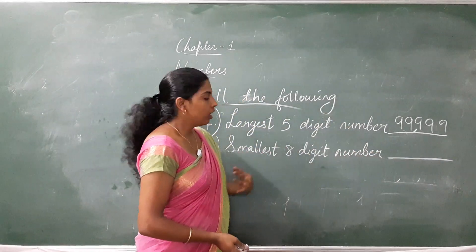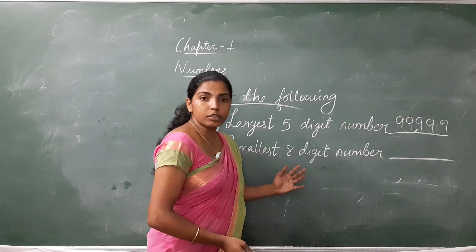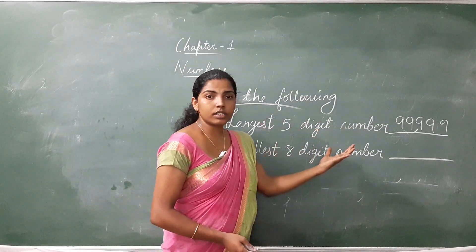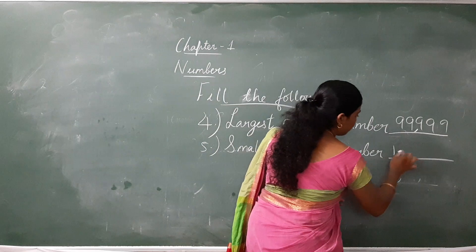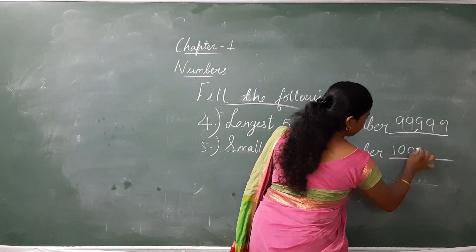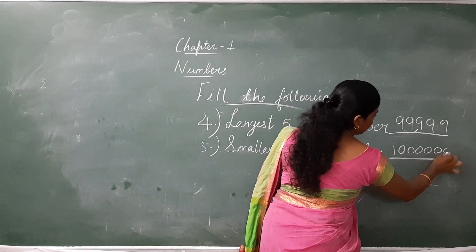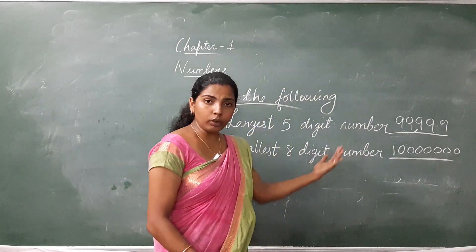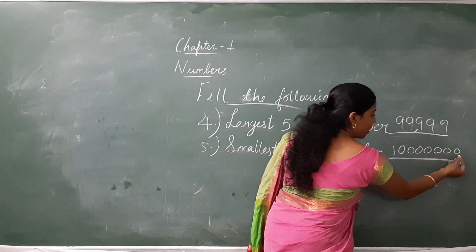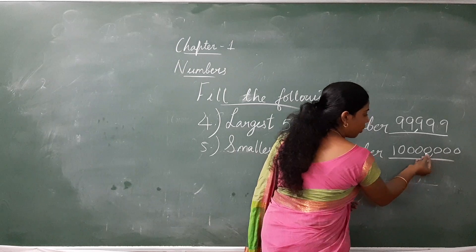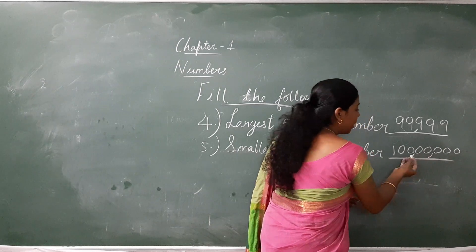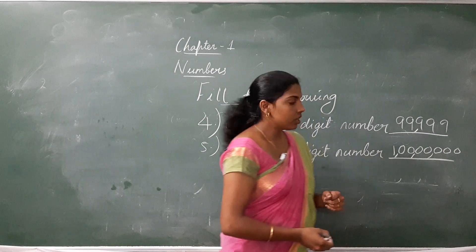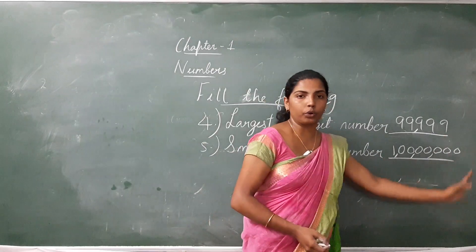Smallest 8-digit number. We want to write the smallest 8-digit number. We have to write 1, and how many zeros? 7 zeros. Next step, we can put commas: ones, tens, hundred, thousand, ten thousand, lakh, ten lakh, and crore. So the number is 1 crore.